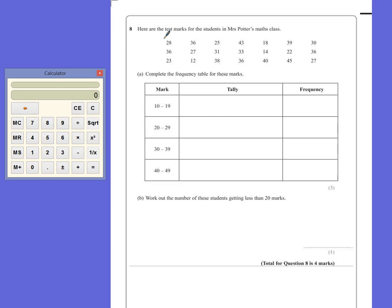The way I usually do this is go through one value at a time, cross it off as we add it to the tally. So 28 is between 20 and 29, put one mark in the tally and then cross it off.